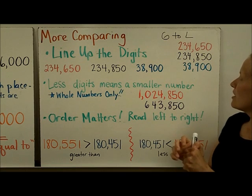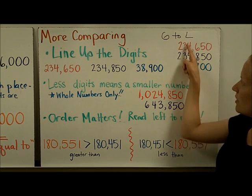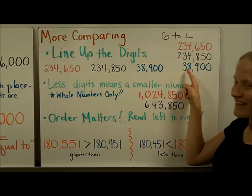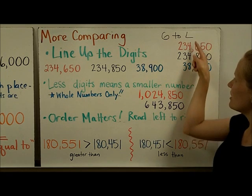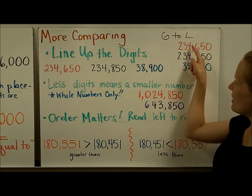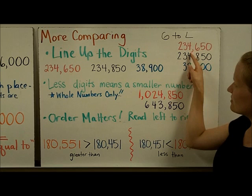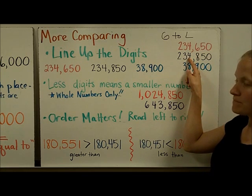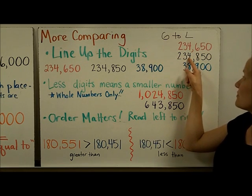And so let's write greatest to least. I'm going to go from biggest to smallest. Then I'm going to look in my hundred thousands, I mean, sorry, ten thousands column. So far, so good.